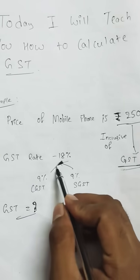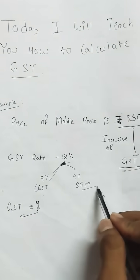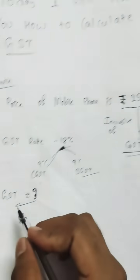The GST rate is 18%: 9% CGST and 9% SGST. So what is the GST amount? Do it in two steps.